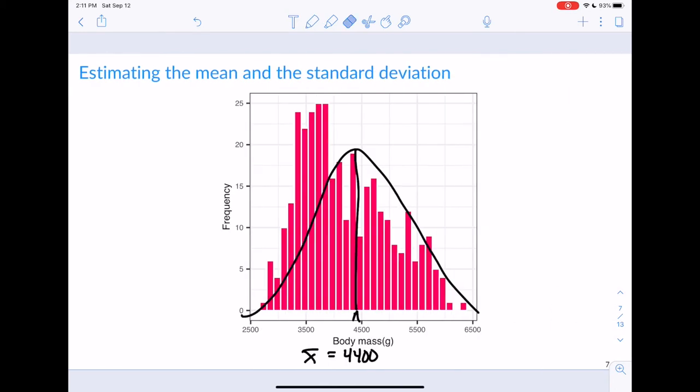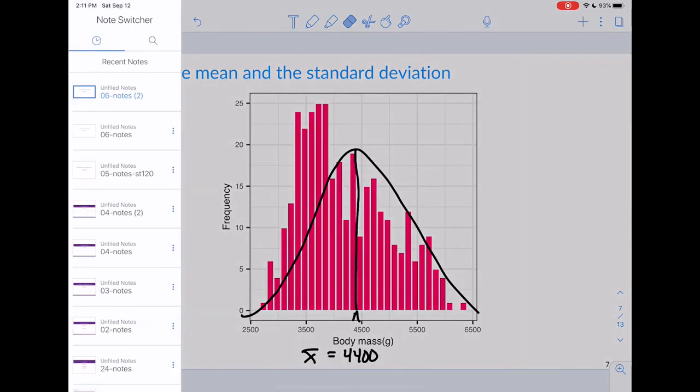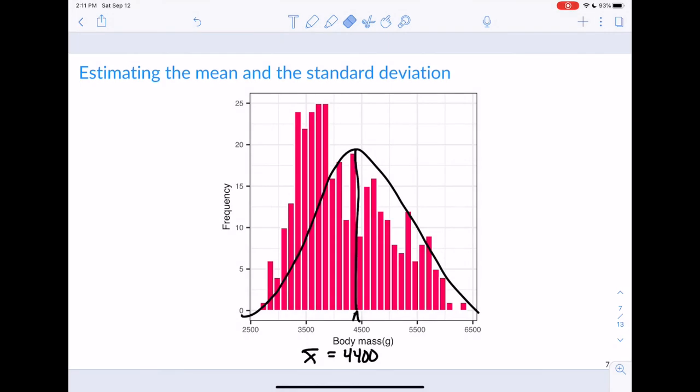So let's see the areas that we think roughly capture 95% of this data. Well, maybe 95% of the data is like here. Maybe it's like right around here, maybe. So maybe we would say that this value is at like 3,100. And then maybe we think if we look over here, maybe it's around here. And so maybe it's 5,600.